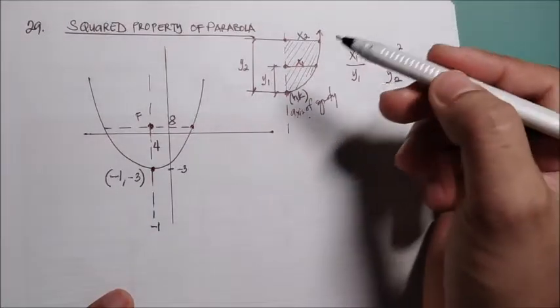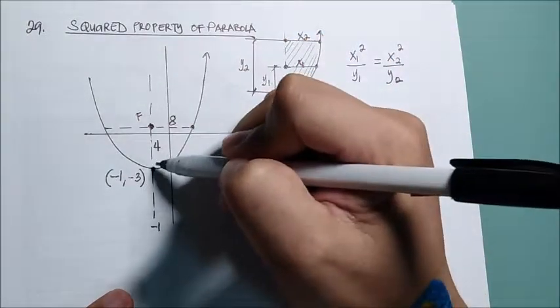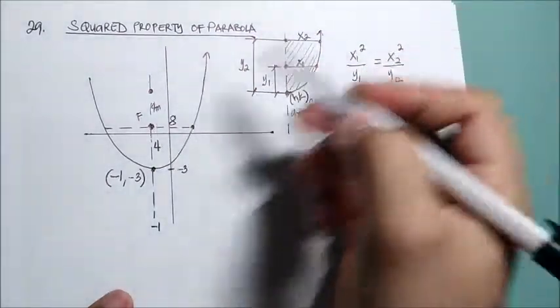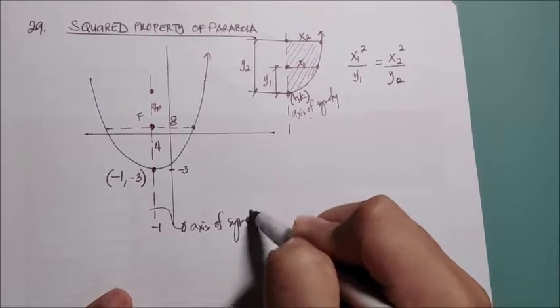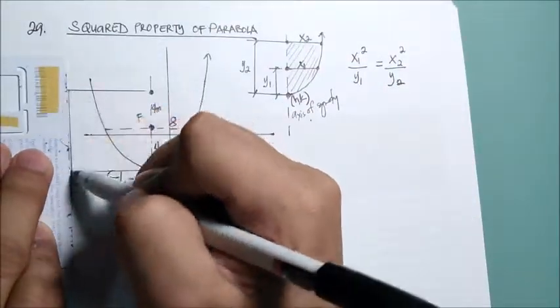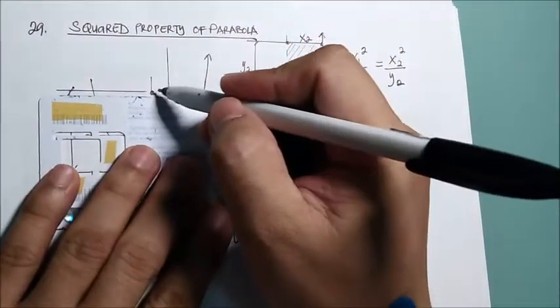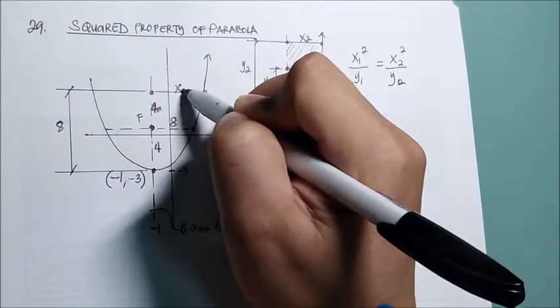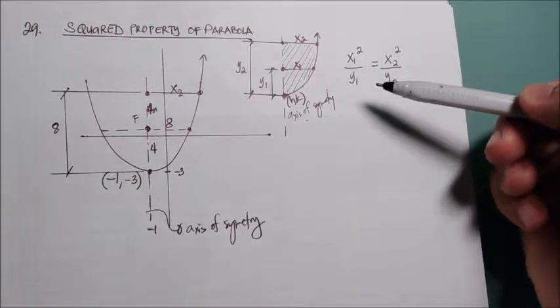Now, if for example, at a distance 8 units from the vertex, another point along the axis of symmetry. Let's say this is 8 units. Then, what is the coordinate of this point? What is the measure of this distance? This is the importance of this squared property of parabola.